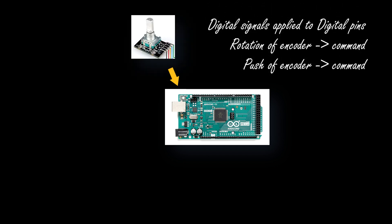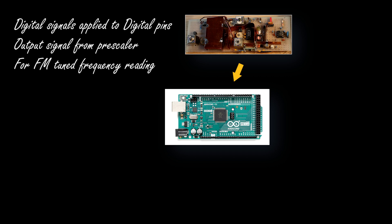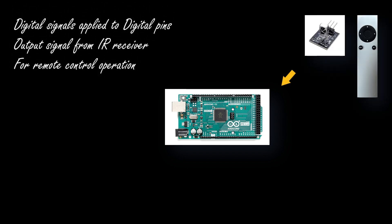Then we have digital input sources. The first is the encoder, used to switch among possible inputs. Another one is the output of the FM tuner's prescaler — this digital signal is used by Arduino to measure the received frequency. Then within the digital input devices we have the infrared remote control: the remote sensor sends digital streams to Arduino, which then uses this stream to understand which button the user has pressed on the remote control.